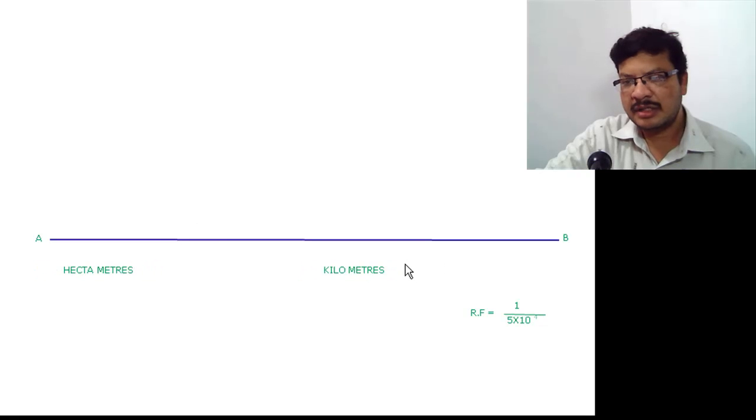So here on this line you will get km and hectometers. Now divide this into 5 equal parts as shown here. This is 0, 1, 2, 3 and 4.